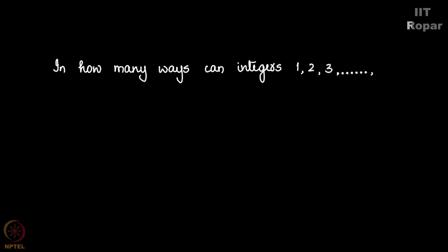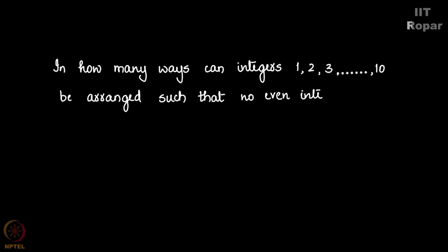In how many ways can integers 1, 2, 3, so on up to 10 be arranged such that no even integer is in its natural place? What do we mean by this? We have been given integers 1, 2, 3 up to 10 and we have to arrange them in such a way that no even integer is in its original position. Let us see how we can do this.